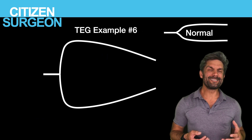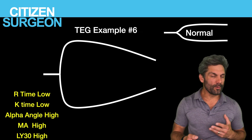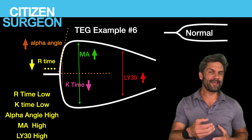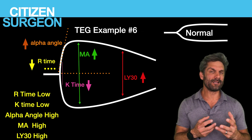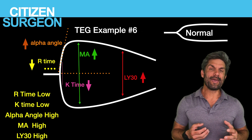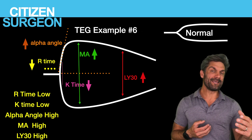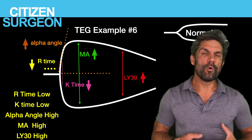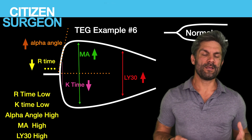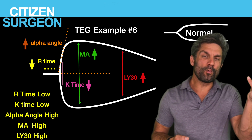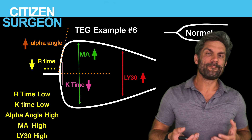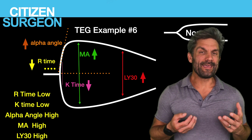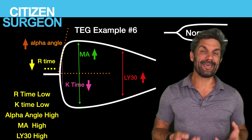In this sixth waveform, the R time is low — forming clot quickly — the K time is low, the alpha angle is increased, and we have an increased MA that is starting to decrease more rapidly than normal. This pattern of hypercoagulability with fibrinolysis is typically seen in a patient with disseminated intravascular coagulation. That is a very sick patient, and you have to treat the underlying cause of DIC in order to get them through.